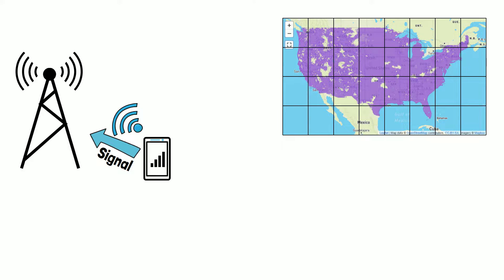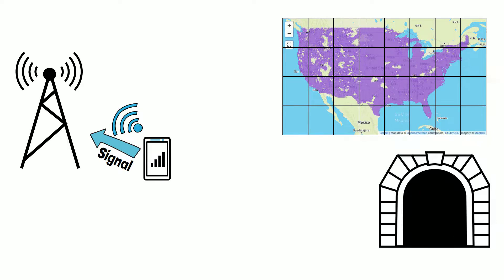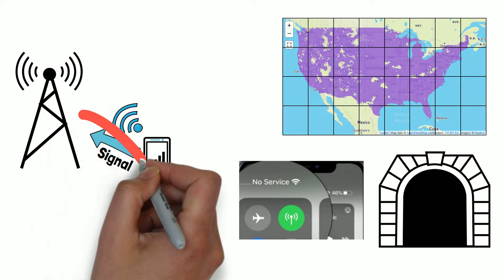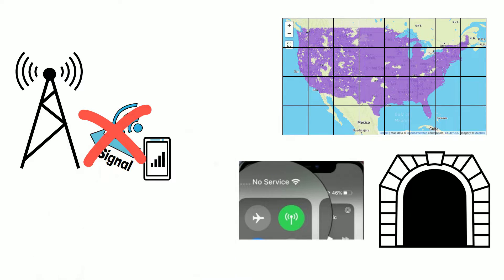If you enter a tunnel and look at your phone, you'll see it quickly detects it has no signal or service. It knows this as it's tried to communicate with the nearest cell tower but had no response, as the tunnel is blocking its communication from being sent.